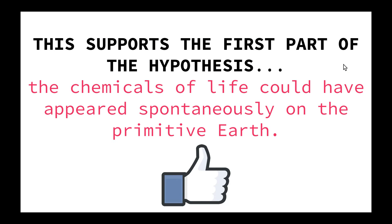The initial experiments resulted in the production of sugars and amino acids, and later variations produced the chemical building blocks for cell membranes and even DNA. This supports the first part of Oparin and Haldane's hypothesis, that the chemicals of life could have appeared spontaneously on the primitive Earth.